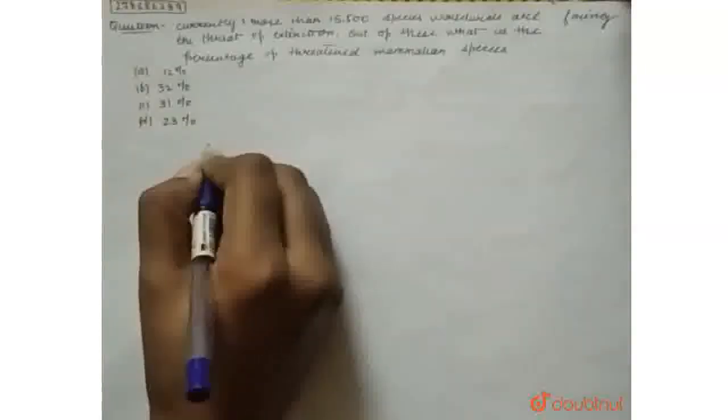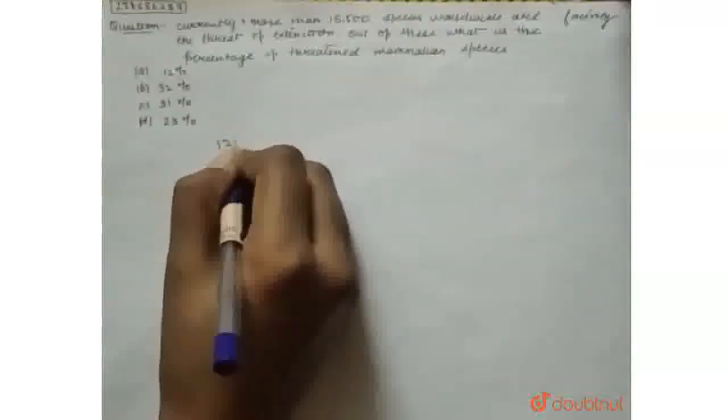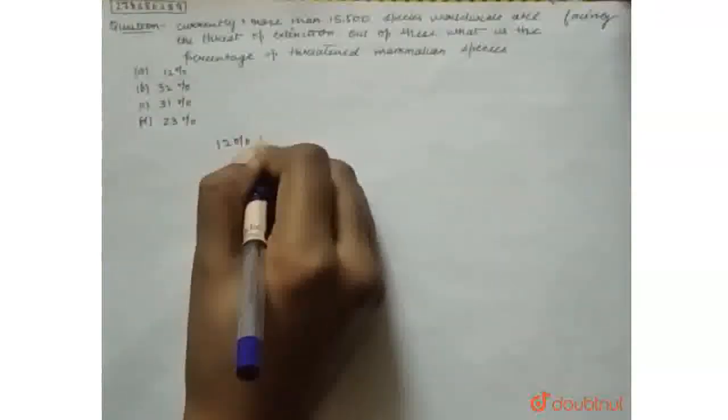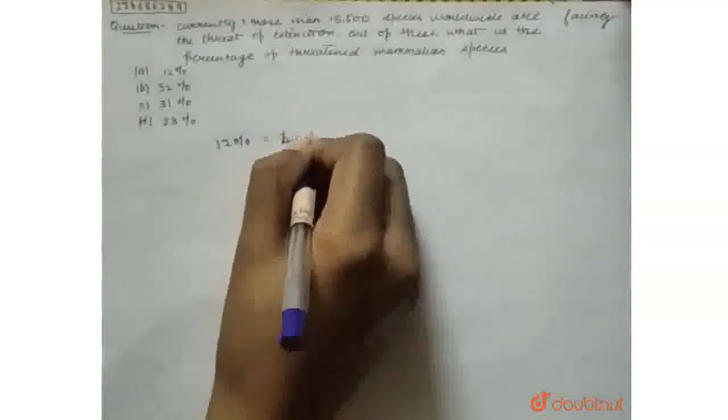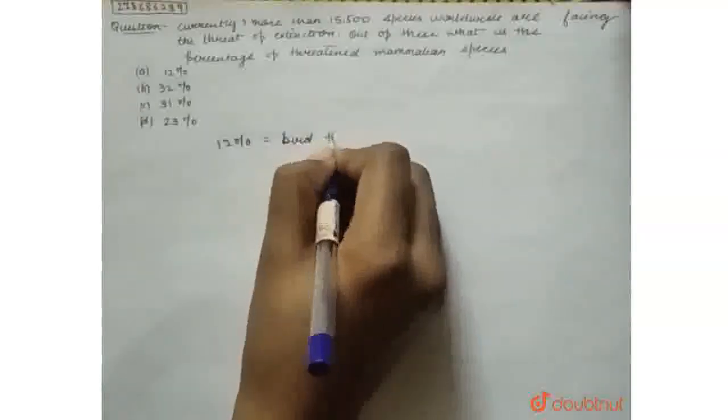So in this question, 12% is bird percentage of threatened species.